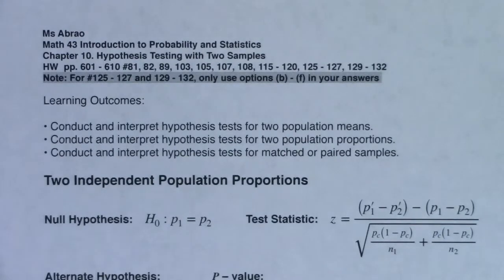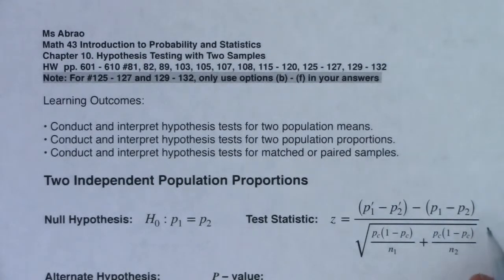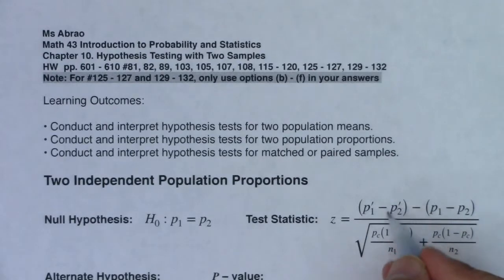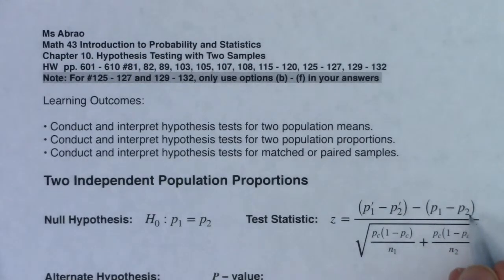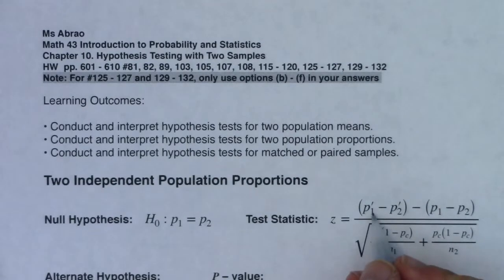The other big distinction is this giant test statistic. We have the difference in sample proportions minus the difference in population proportions, over a standard error. There's P-prime of one — the sample proportion from your first treatment group — and P-prime of two — the sample proportion from your second treatment group. There are also the hypothesized proportions for each population and P-sub-C, which we'll talk about shortly. You're managing five numbers in this formula.